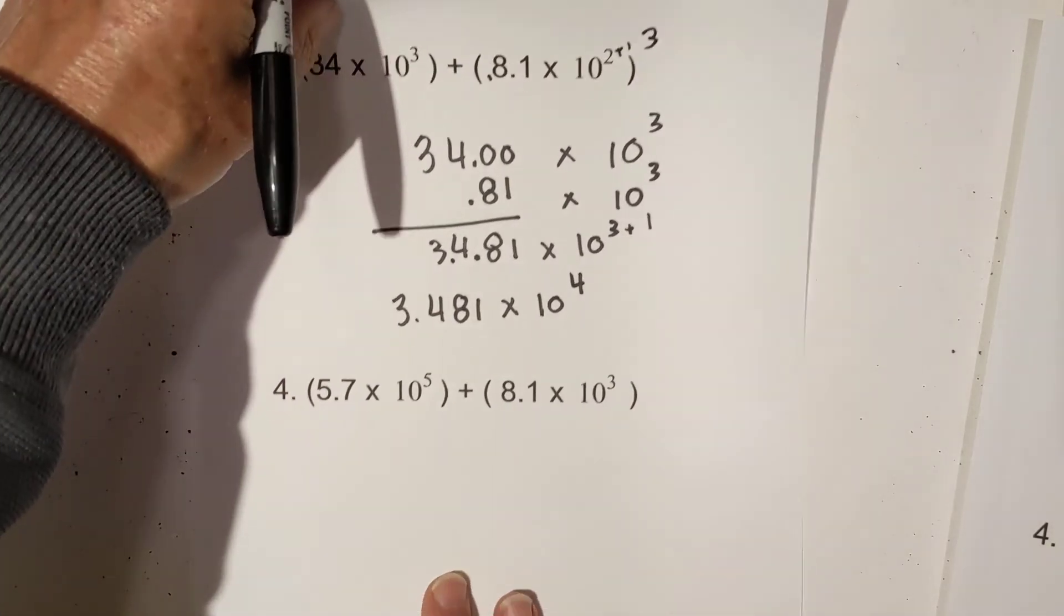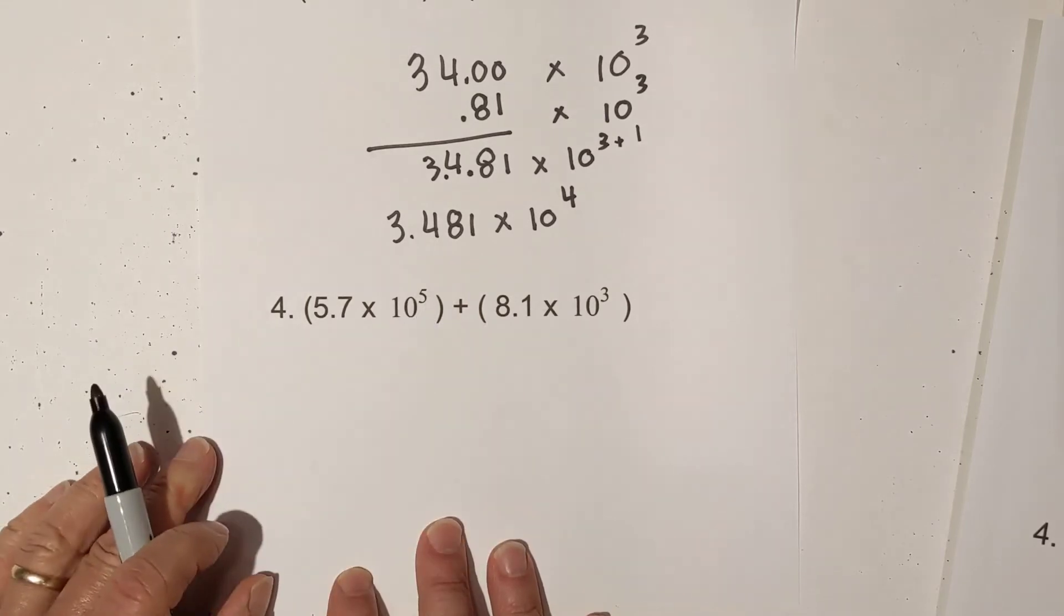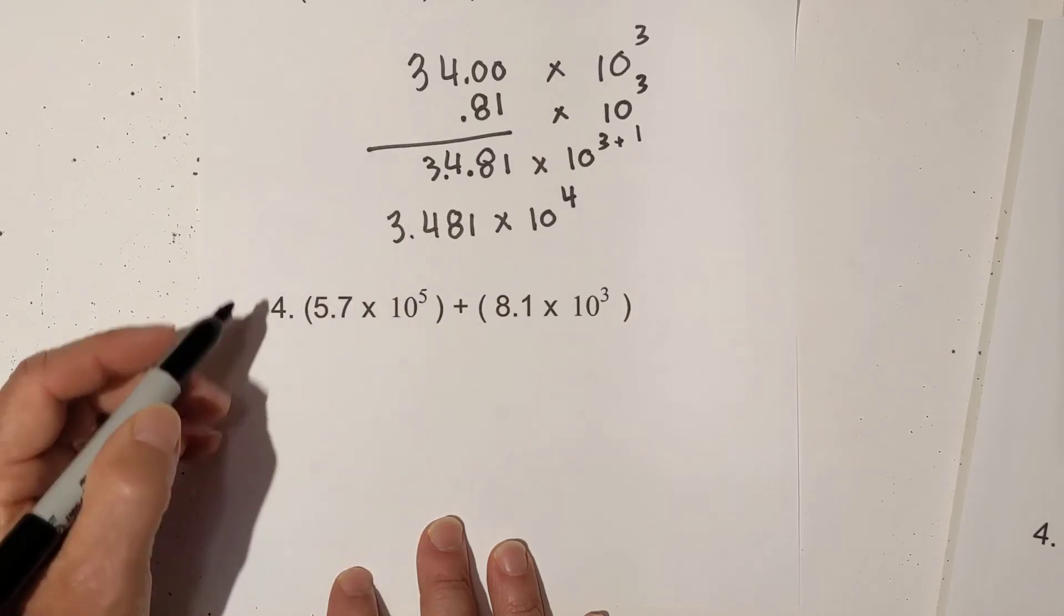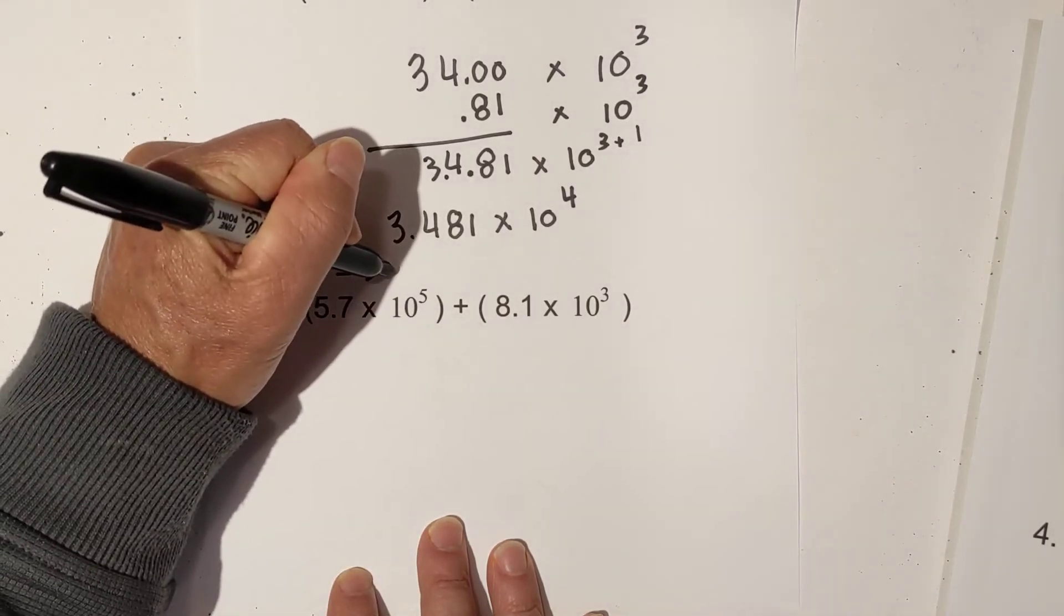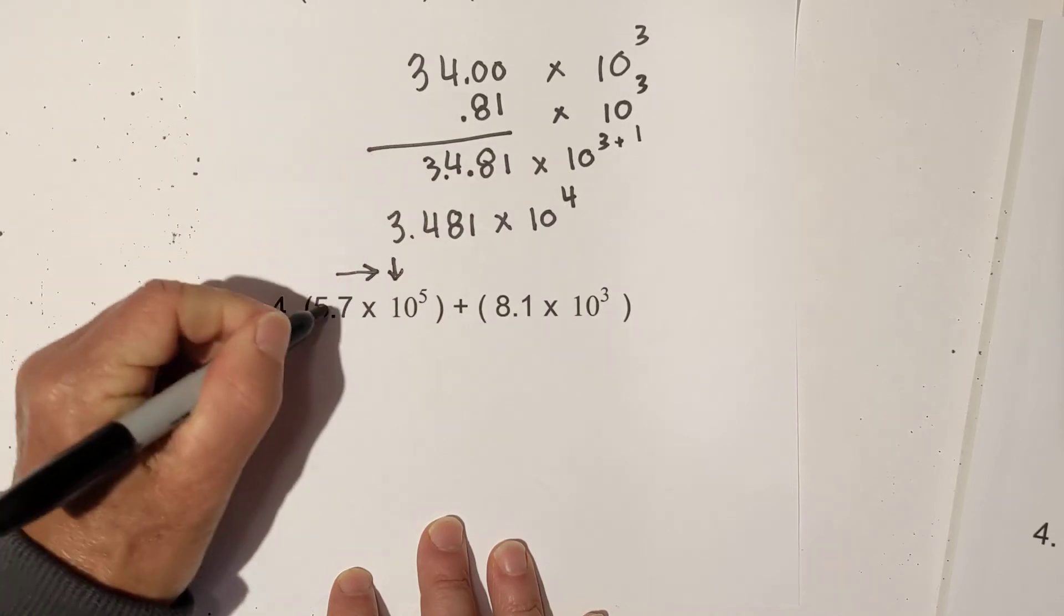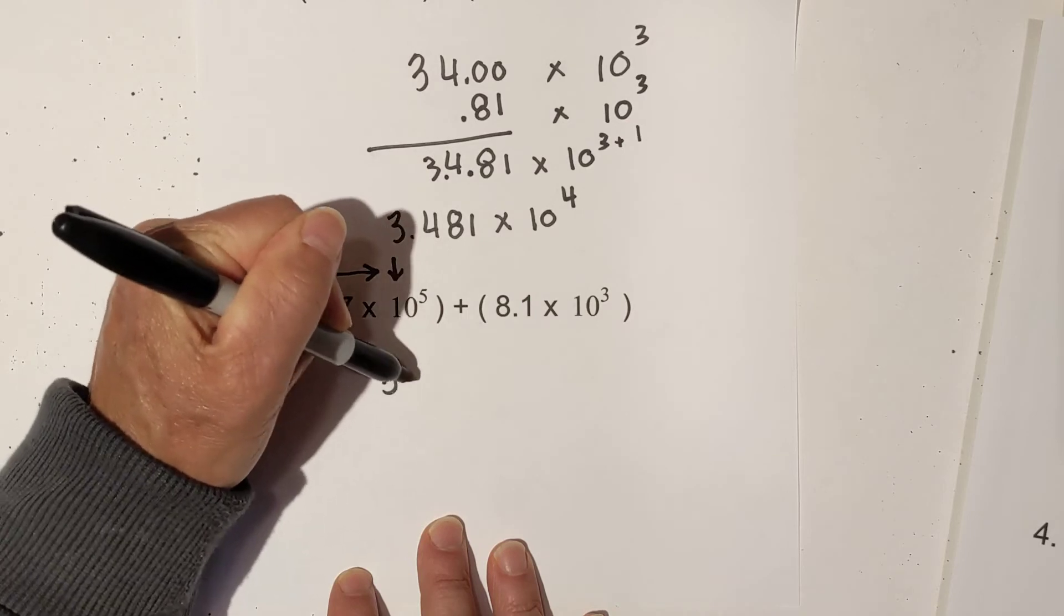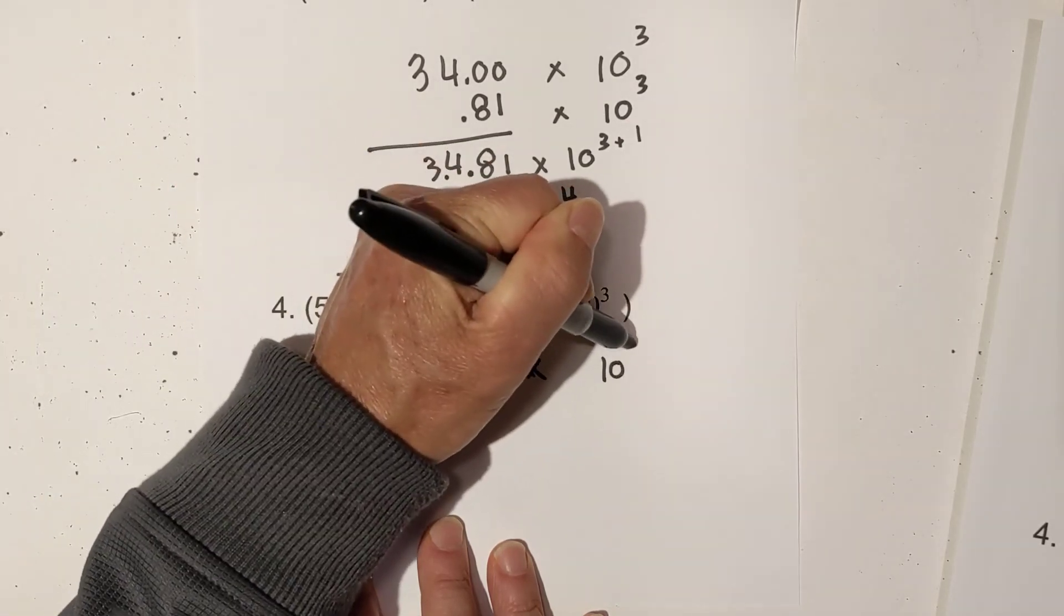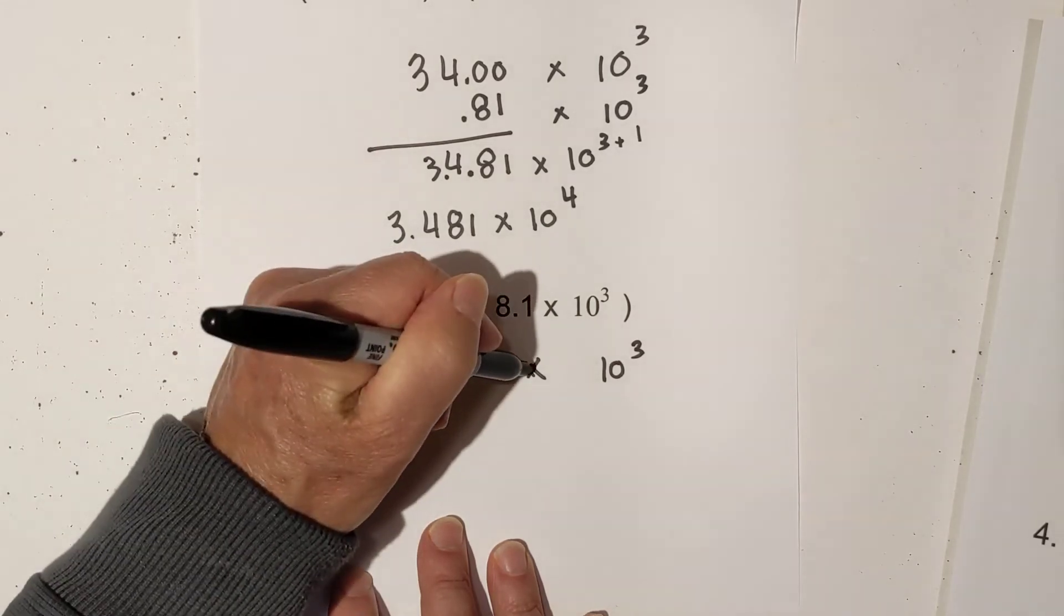And finally, let's look at this last one. I put this one here because we actually have to move it two places. I think what I'll do on this one is I'm going to subtract 2 from the 10 to the fifth, which means I'm going to move the decimal in this direction. So I'm going to rewrite this as 570 times 10 to the third, because I moved the decimal two places.